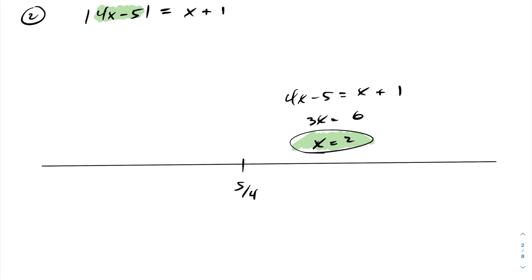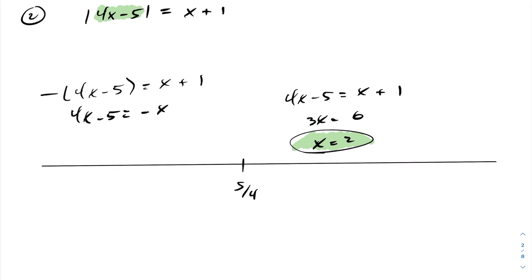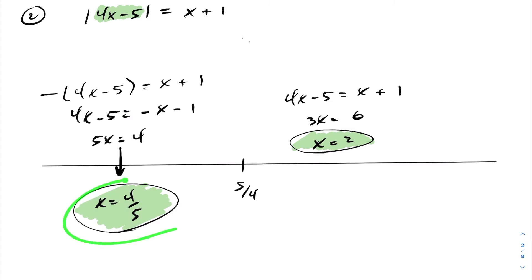Now on the left-hand side of 5 over 4, any input value we choose inside of the absolute value will be negative. So we can multiply it by a minus sign. Then solving the absolute value equation, I can multiply across by negative 1. Solving this, I end up getting 5x equals 4, and x equals 4 over 5. You'll notice that 4 over 5 is within this interval, and we have our two answers to this absolute value equation.